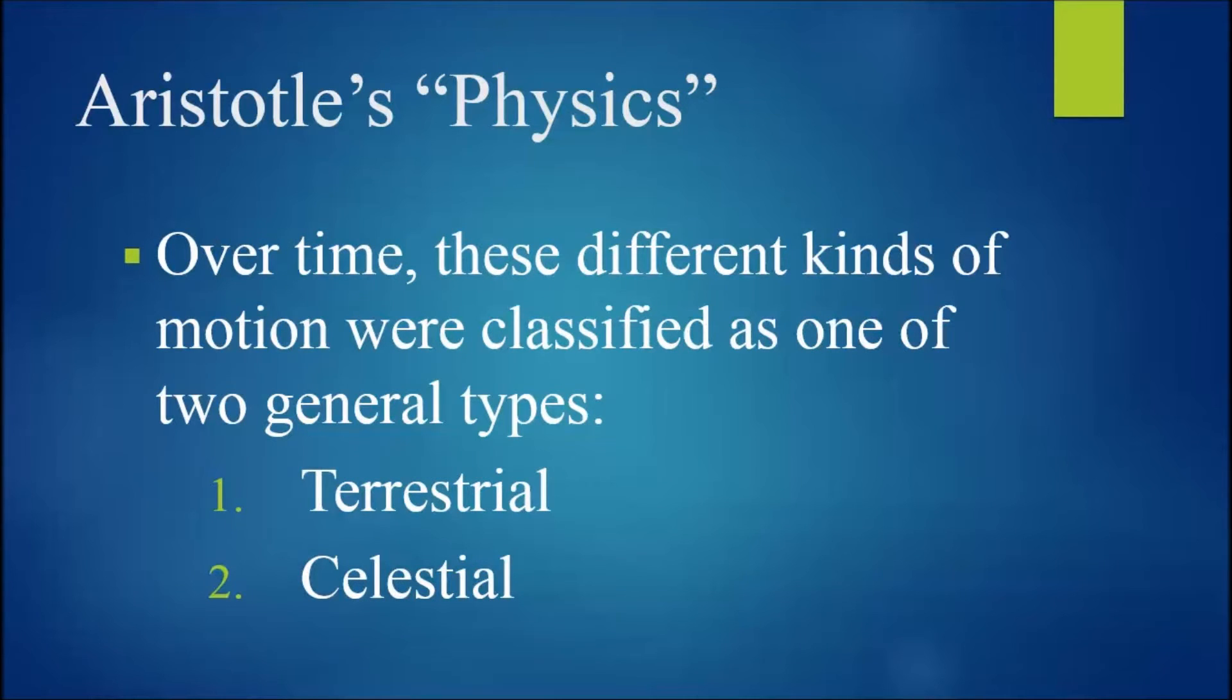Over time, these different kinds of motion were classified as one of two general types, terrestrial and celestial, that is, the objects on the earth and the objects in the heavens.